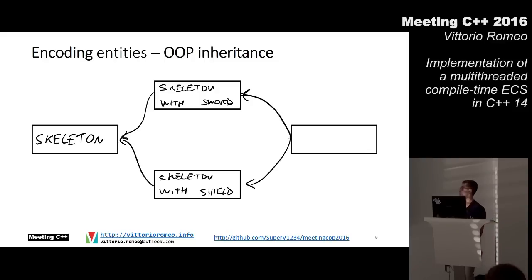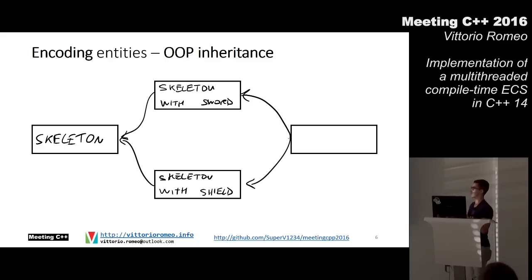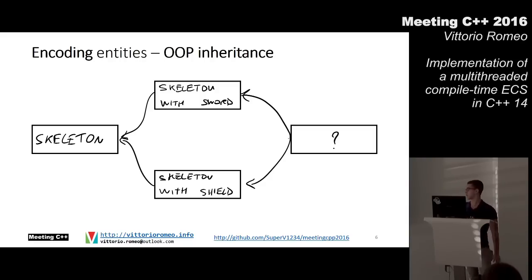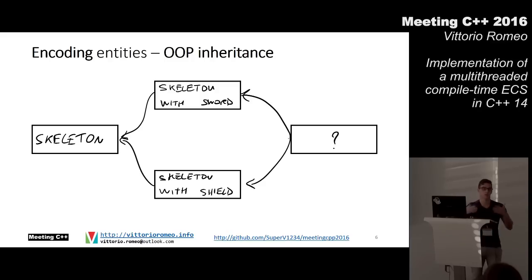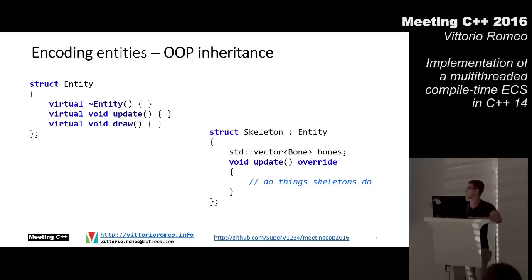This is an example of where OOP inheritance fails in terms of flexibility. Say we're making a game and have a skeleton, a skeleton with a sword, and one with a shield. Now we want one with both sword and shield — this is the classic diamond inheritance problem. You could restructure your tree, but you end up with an exponential explosion of classes. In code, we have a base entity with a virtual interface and concrete entities that derive from it using virtual and override — incurring a runtime cost.